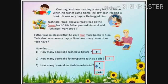Now, how many books does Yesh have in total? Yesh already had seven books and his father gave him four more books. That means seven plus four is equal to eleven. Yesh now has eleven books. I hope you enjoyed the story. Now let's learn more examples of addition.